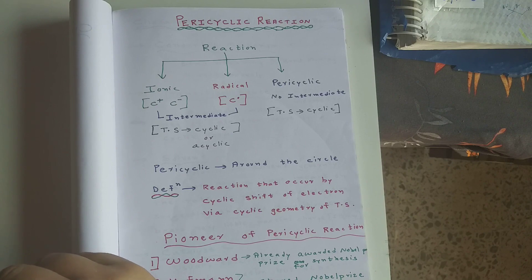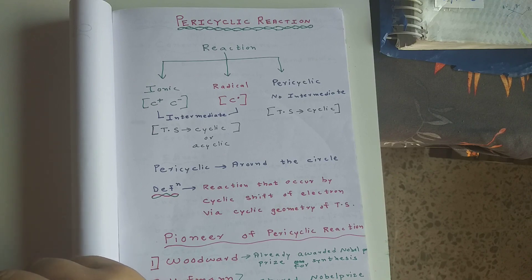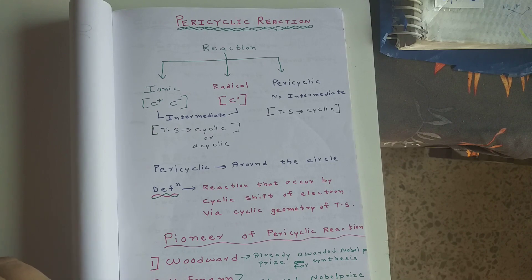From the NET or GATE exam point of view — particularly for the NET exam — it is expected to carry around 15 to 20 marks weightage from this topic. Without options, it is even more than that.